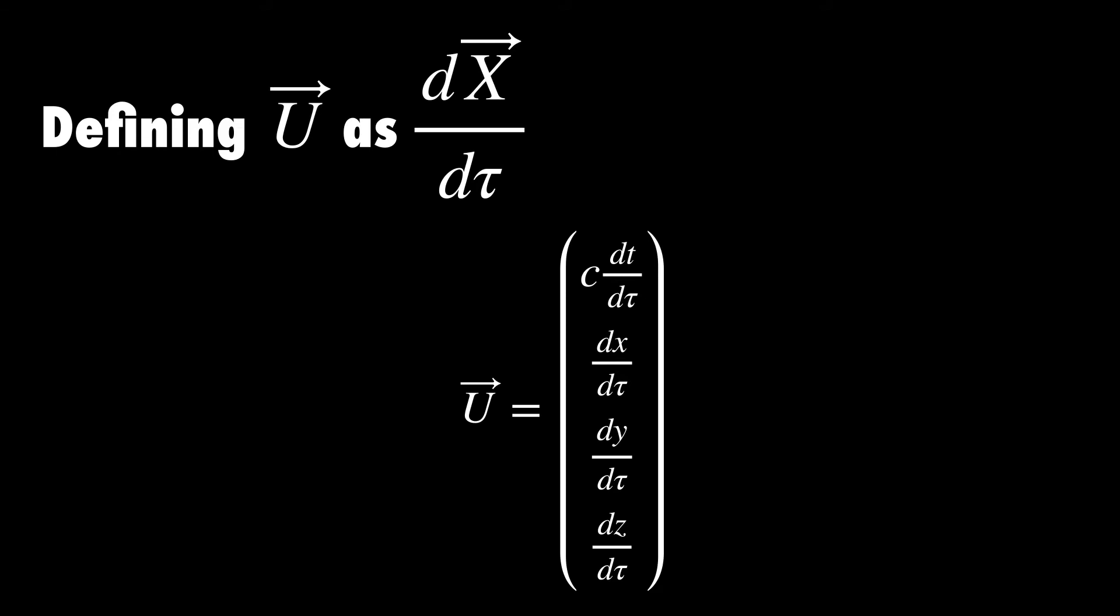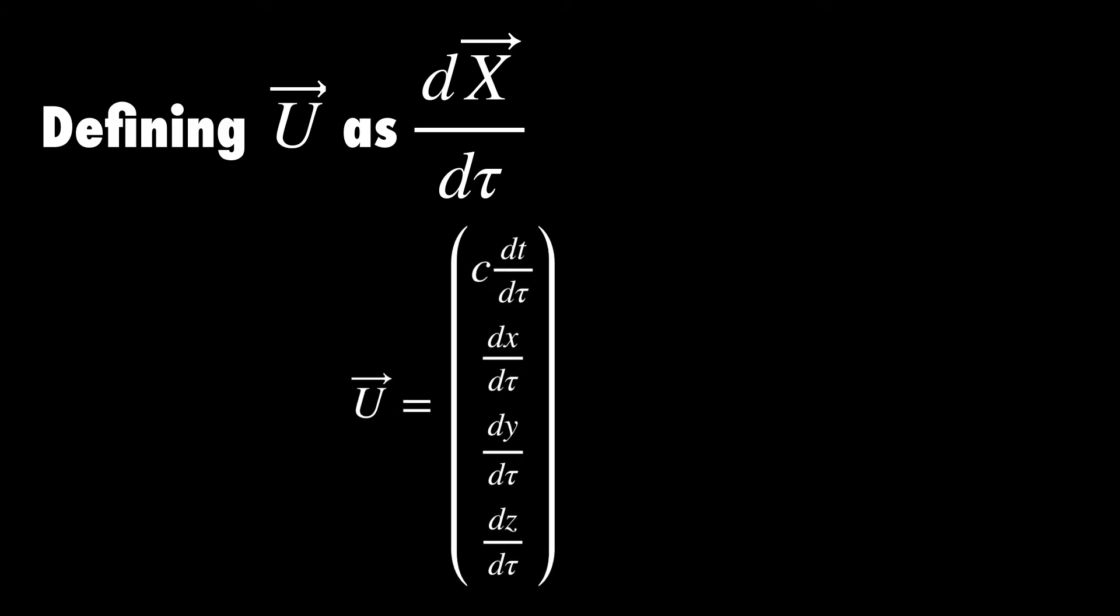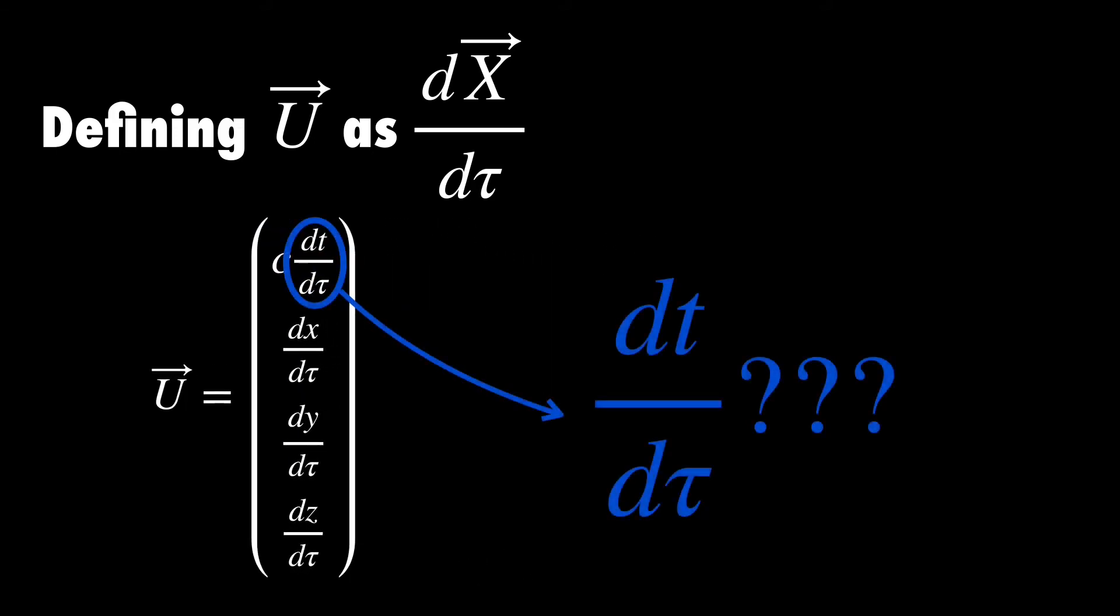So we're defining four-velocity as the proper time derivative of four-position. We're going to go through simplifying each term one at a time. But quickly we're going to come upon this question, wait, what's dt by dτ?